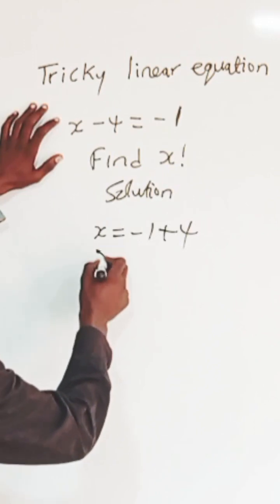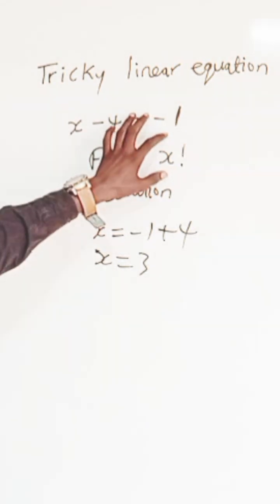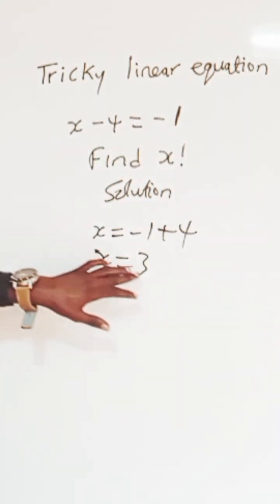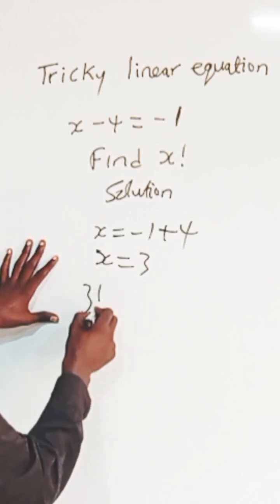Remember we are told to find x factorial. So x factorial in this context is 3 factorial. 3 factorial is essentially 3 times 2 times 1.